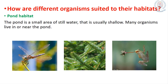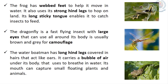How are different organisms suited to their habitats? There are various habitats in the environment, such as pond habitats and green habitats. In the pond habitat, various animals and plants are living, such as grasshoppers, frogs, ducks and plants like hydrilla. The frog has webbed feet, the grasshopper has large eyes, and the water boatman carries a bubble of air under its body — these are all special adaptations.